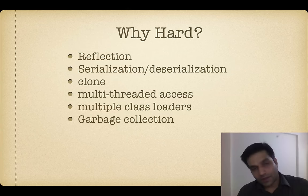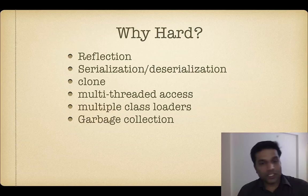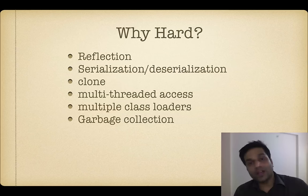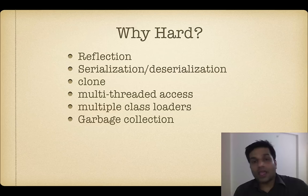So in part 1 what we saw was that it was very hard to get singleton right. Reflection, serialization, cloning, multi-threaded access, multiple class loaders — all of them can give an opportunity to create a new instance and violate the basic singleton contract of having one and only one instance. So in today's video, we are going to see what we can do to address these issues and how far we can fix this.